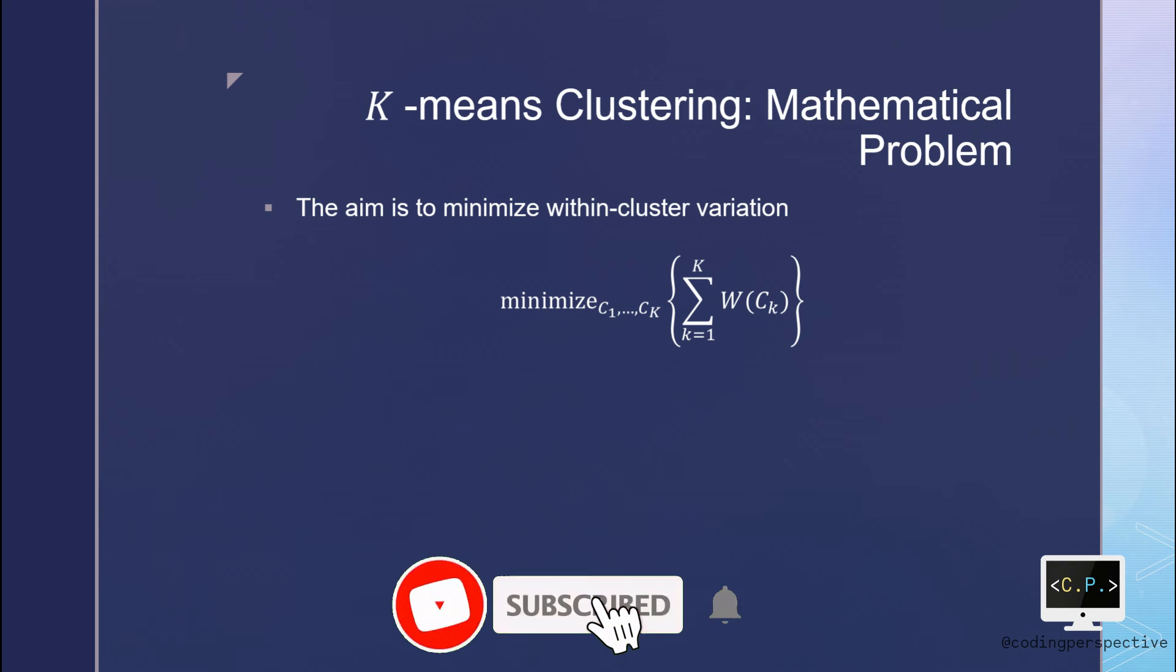The idea behind k-means clustering is that a good clustering is one for which the within-cluster variation is as small as possible. The within-cluster variation for cluster CK is a measure W(CK) of the amount by which the observations within a cluster differ from each other. And the minimization problem that we want to solve is the summation over all clusters W(CK).